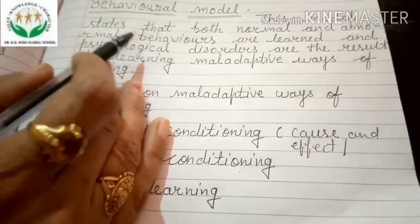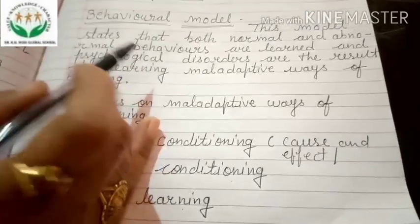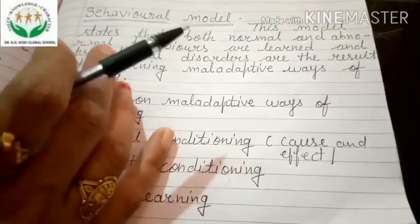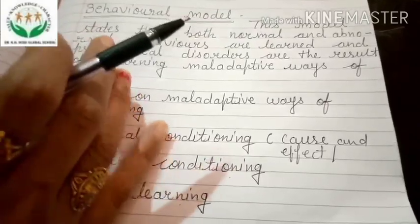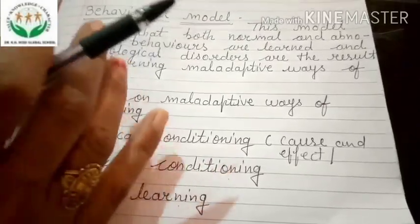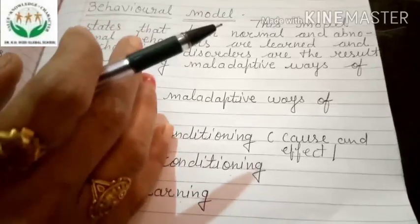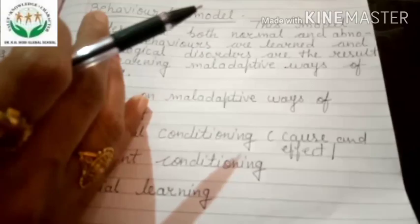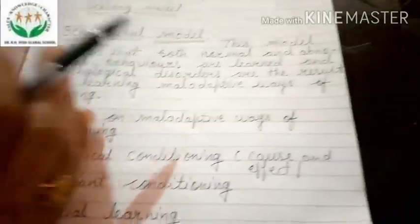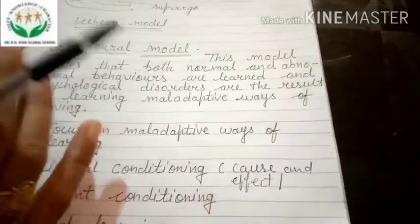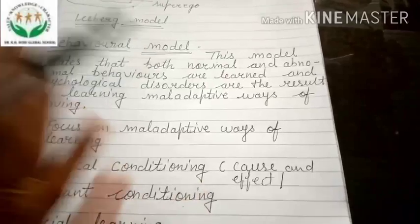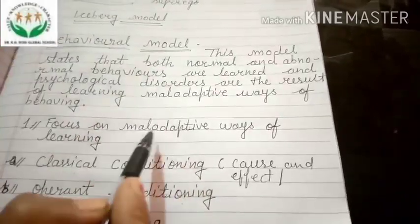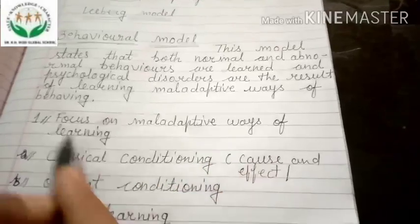The Behavioral Model is interconnected with the learning chapter you studied in 11th class. We have learned Pavlov, Skinner, Albert Bandura's theories of learning. They all told us that behavior depends on learning. Since we can learn behavior, we can also modify it. So the focus here is on maladaptive ways of learning.